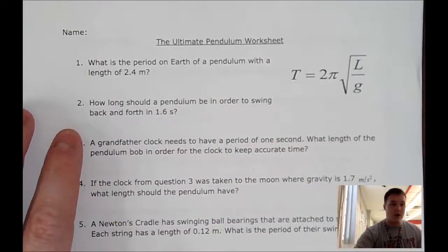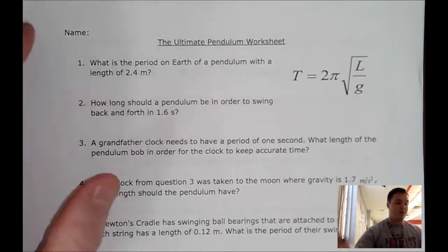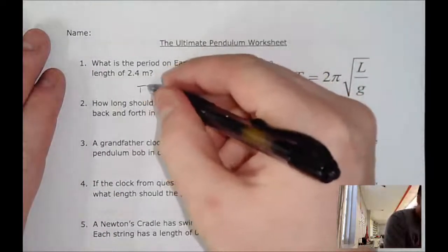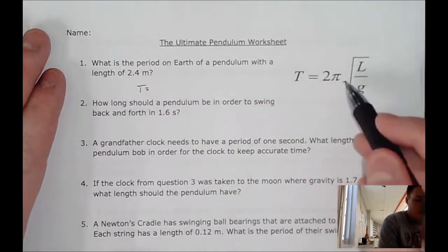The first problem states: what is the period on Earth of a pendulum with the length of 2.4 meters? The formula for the period of the pendulum is seen right here, T = 2π times the square root of the length over the gravity.